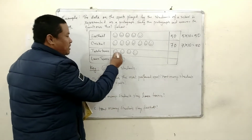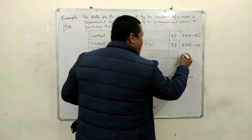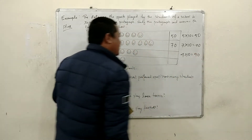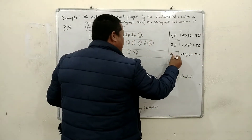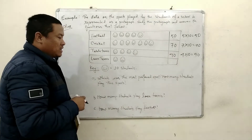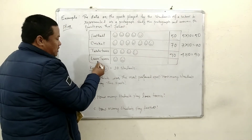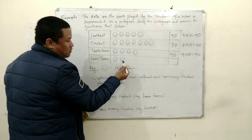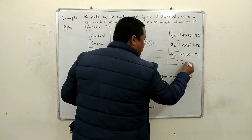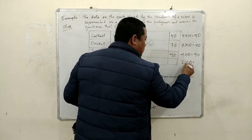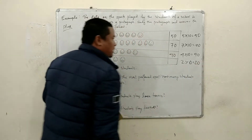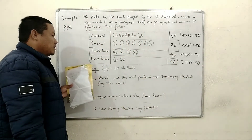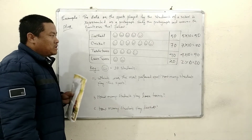Table tennis: 1, 2, 3, 4 pictures — 4 × 10 = 40. That means 40 students played table tennis. And lastly, lawn tennis — how many pictures are there? 1, 2. Two pictures, and one picture equals 10 students, so 2 × 10 = 20. That means 20 students play lawn tennis.